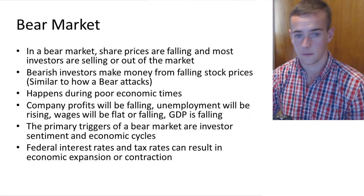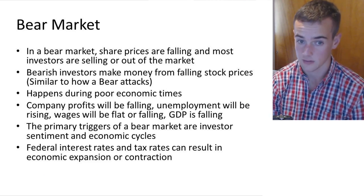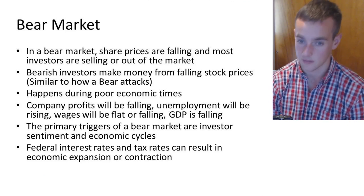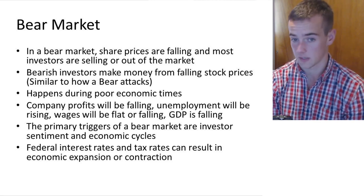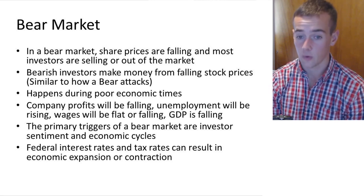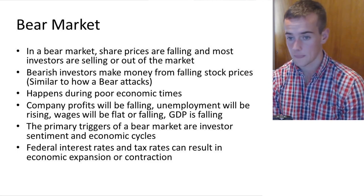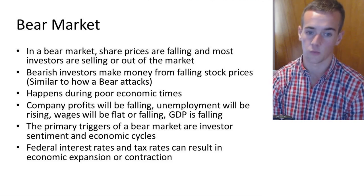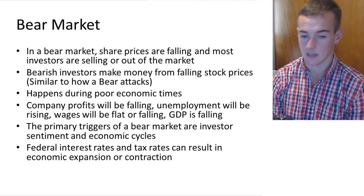In a bear market, share prices are falling and most investors are selling or out of the market. Bearish investors make money from falling stock prices — similar to how a bear attacks with their claw in a downward motion. A bear market happens during poor economic times: company profits will be falling, unemployment will be rising, wages will be flat or falling, and GDP is also falling. The primary triggers of a bear market are investor sentiment and economic cycles.